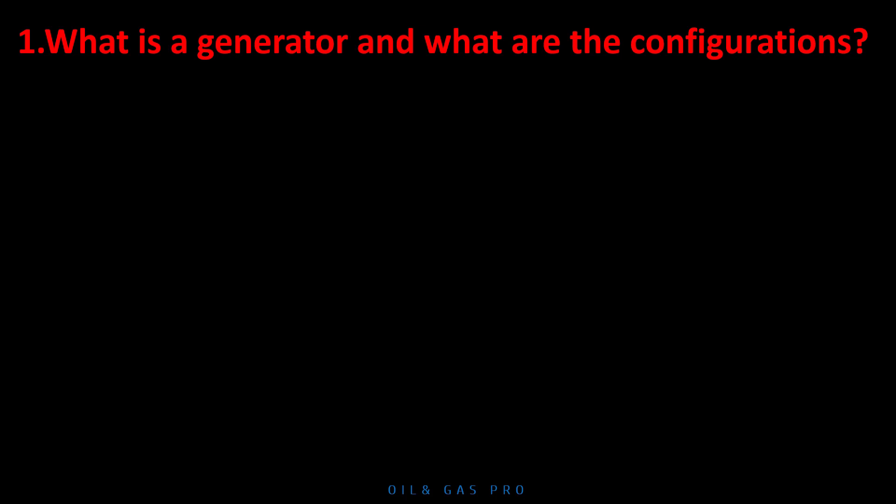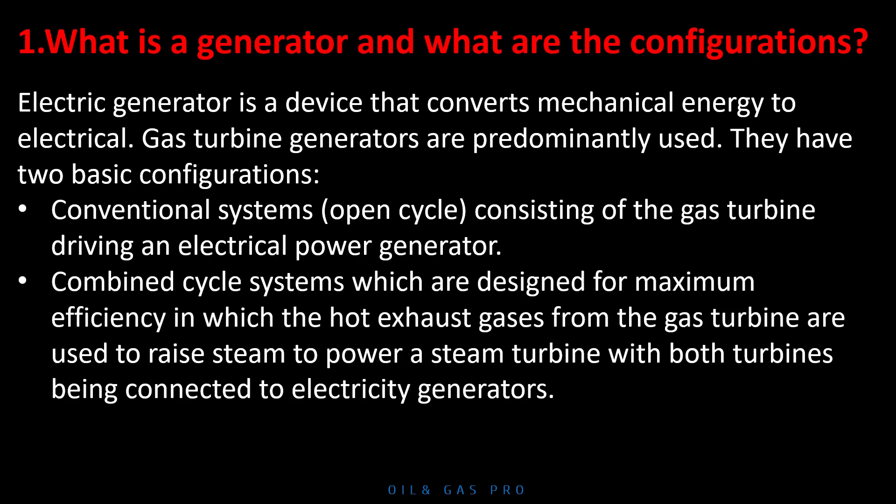What is a generator and what are the configurations? An electric generator is a device that converts mechanical energy to electrical energy. Gas turbine generators are predominantly used.